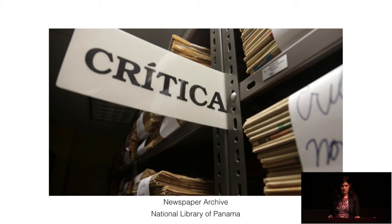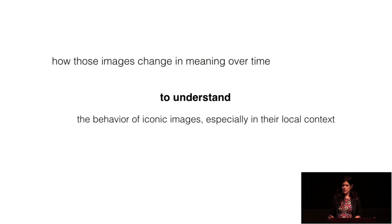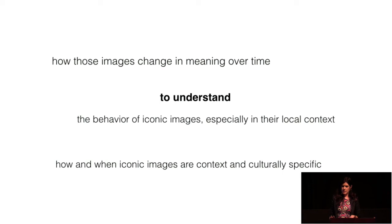What are our goals with this project? One, to understand the behavior of iconic images, especially in their local context. Two, to see how those images change in meaning over time — including how they're memorialized and what efforts operate to suppress or forget them. And three, how and when iconic images are context- and culturally specific. In this case, that means thinking about whether the image will lose its iconicity if it doesn't become more officially part of the collective memory of younger generations.